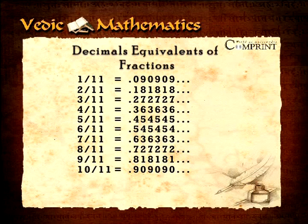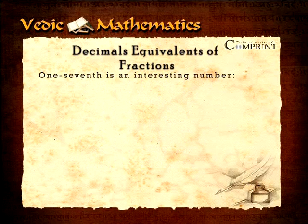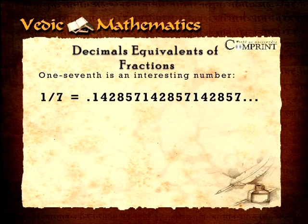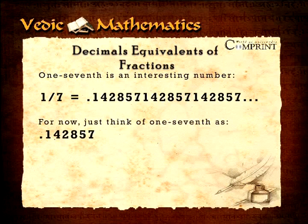As long as you can remember the pattern for each fraction, it is quite simple to work it out. The decimal plays as far as you want and need to go. Oh, I almost forgot — we haven't done the sevenths yet. Let's get back to the seventh. One-seventh is an interesting number. Just think of one-seventh as decimal followed by 142857.